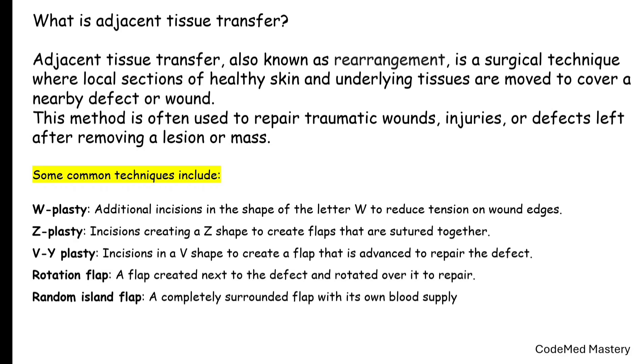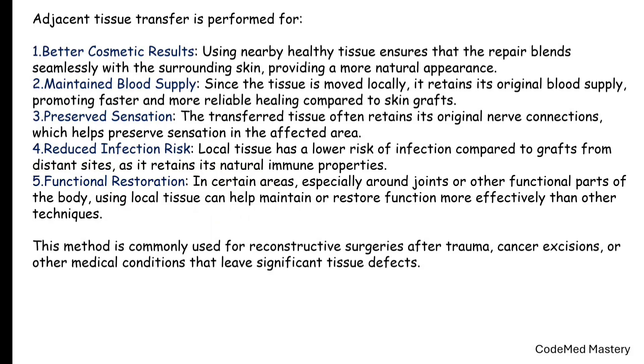Next is Z-plasty, incisions creating a Z-shape to create flaps that are sutured together. Next is V-to-Y plasty, where incisions are made in a V-shape to create a flap that is advanced to repair the defect. Rotation flap is a flap created next to the defect and rotated over it to repair. Random island flap is a flap which is completely surrounded with its own blood supply.